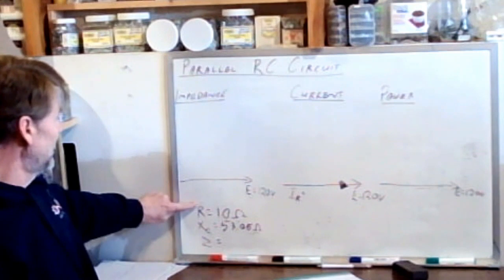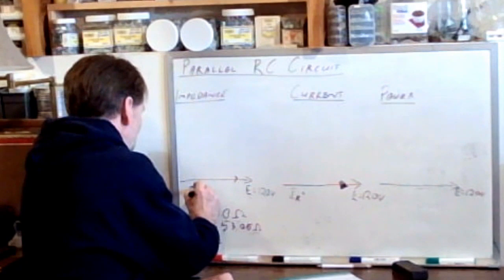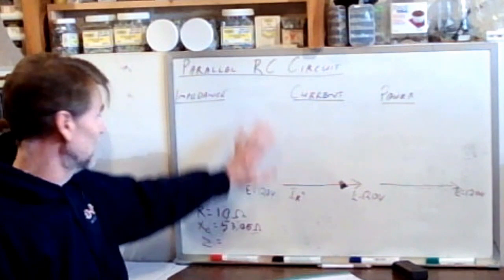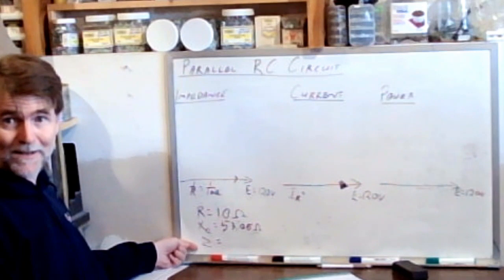Notice what I've done here is I've just listed R, XC, and Z rather than putting them in the triangle. Because in fact, in the triangle, this would be the inverse of R is equal to the inverse of 10 ohms. So that's the information we have to put in the triangle. But I'm not even going to do that, we're just going to list our three values here. We know R, 10 ohms, we know XC, 53.05 ohms.